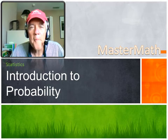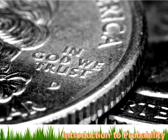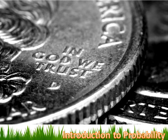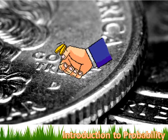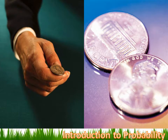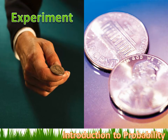Today we're going to talk about probability, and I think the probability that you'll understand probability by the end of this lesson is close to a hundred percent. We'll start with an easy example — we'll start by flipping a coin. When we're talking about probability, the event that we're trying to find the probability of is called the experiment, so our experiment will be flipping the coin.